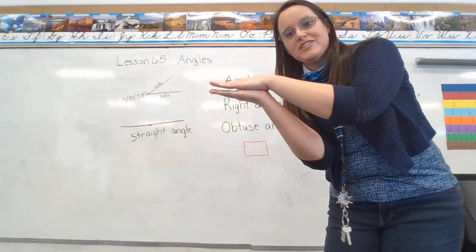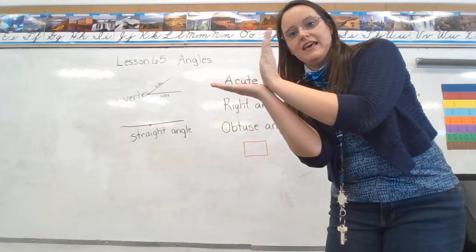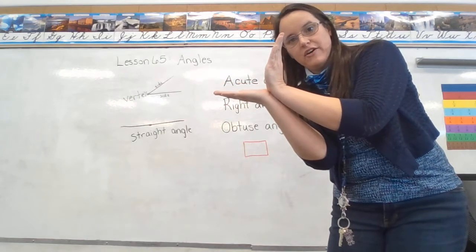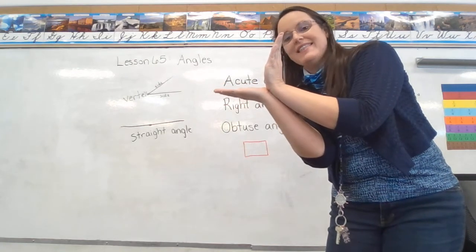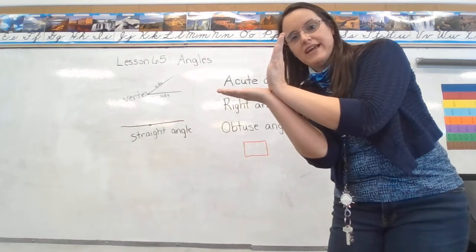If I open it just a teeny tiny little bit that might be one degree. If I create a square angle, perpendicular lines, that is a 90 degree angle and we call it a right angle.